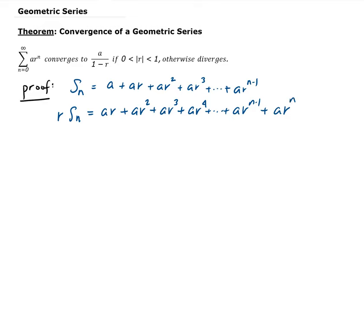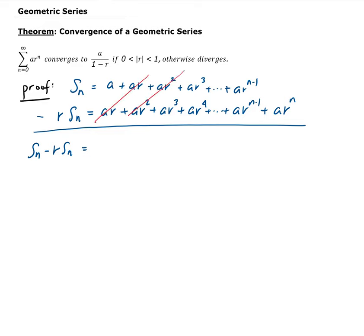So what we're going to do now is take the difference. This leaves us with S of N minus R times S of N, and these terms are going to cancel out. That's going to leave us with A minus A times R to the N.